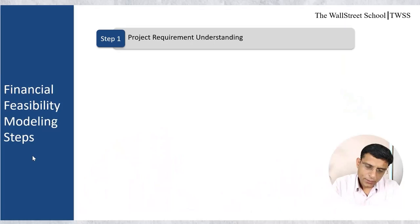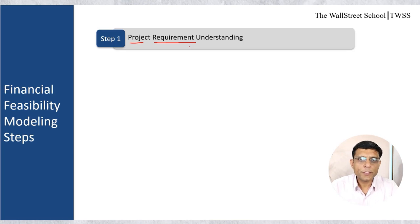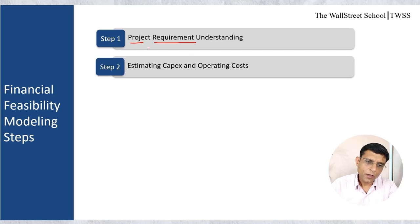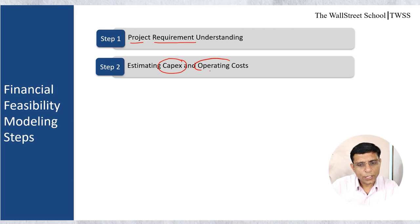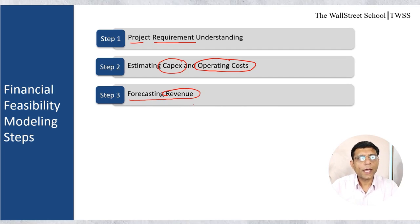Now let's understand the step-by-step approach to prepare a financial feasibility model. Step 1: Understanding project requirements — what the project is all about, how we will earn cash flows from it, and what sort of investment is required. Step 2: Estimate capital expenditures and operating costs we need to incur on this project. Step 3: Estimate revenues from this project — how we will earn cash flows and how we will monetize it.